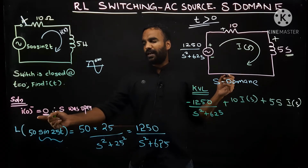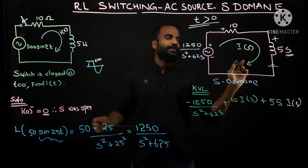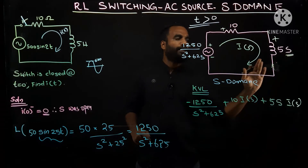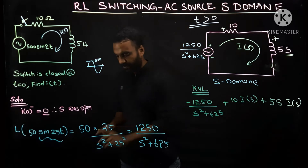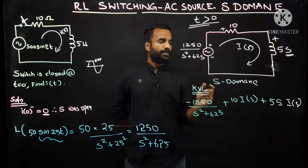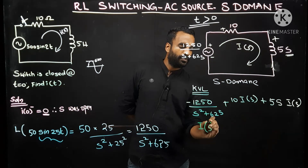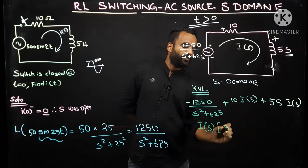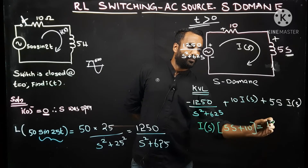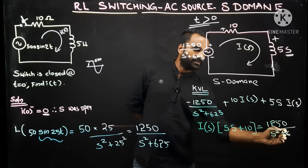We are not having I₀. If I₀ were present, we would have to connect a voltage source in negative polarity in series with the inductor. But in this case I₀ is absent, so no voltage source needs to be connected. Rearranging the KVL equation: I(s) × (5s + 10) = 1250 / (s² + 625).